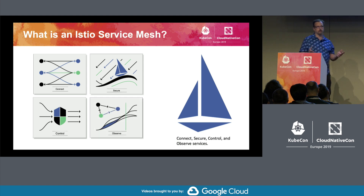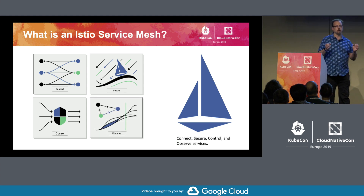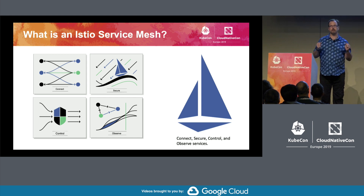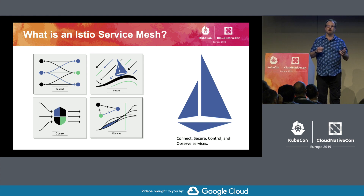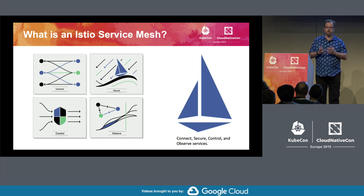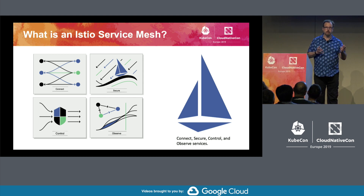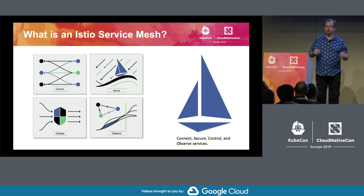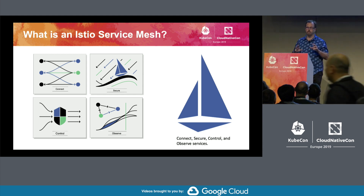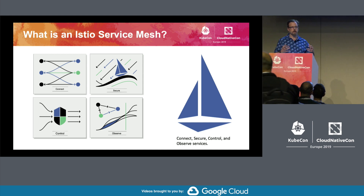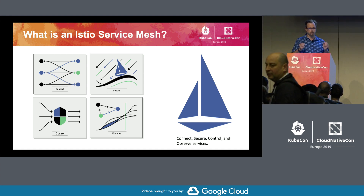Finally, there's observability. Observability is key — one of the most valuable things that Istio provides. It provides this via Prometheus. You can use Prometheus with a variety of adapters. Essentially, it allows you to watch all the traffic in the network — what it's doing, what your requests are doing, what your responses are doing, what their timings are. Pretty much anything you can think of, we monitor. This is huge and very valuable.